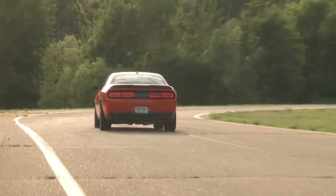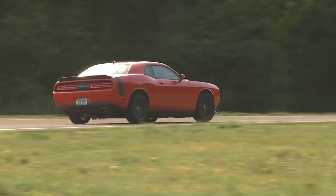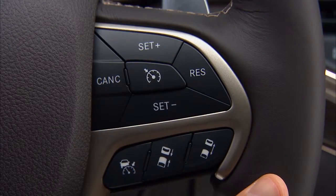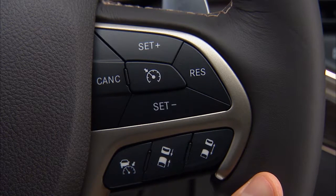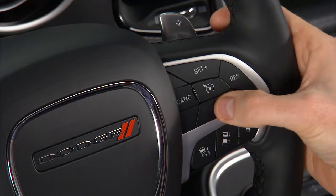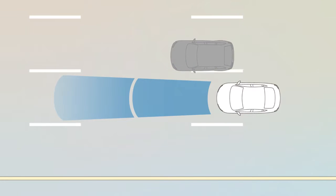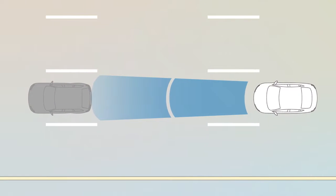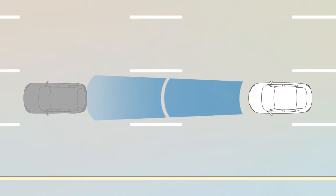Now, let's look at the adaptive part of adaptive cruise control. To turn ACC on, push the ACC on-off button, then push set plus or set minus to engage. The system will now maintain a set distance between you and the driver in front of you without having to constantly reset your speed.